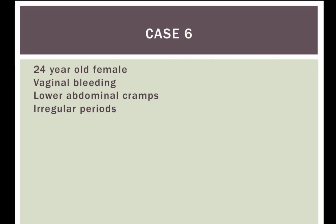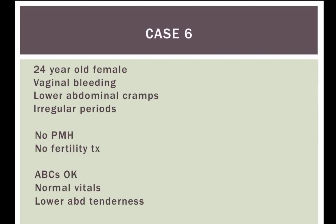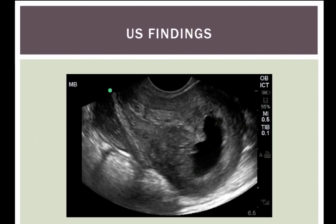Moving right along to Case 6. 24-year-old female, vaginal bleeding, lower cramps, irregular periods, no past medical history, no fertility treatment, normal exam similar to prior. Looks about the same.